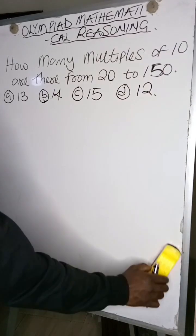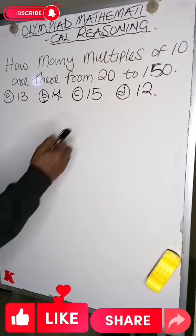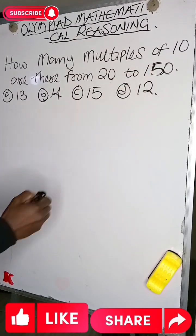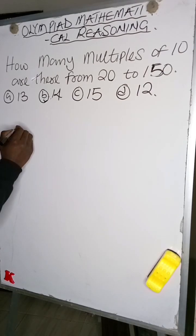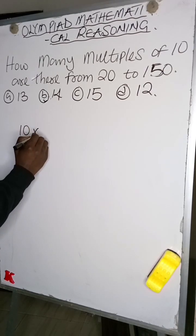In 60 seconds, you are asked to find the multiples of 10 from 20 to 150. Multiples of the numbers are the products you get when you multiply a number from 1 to infinity.